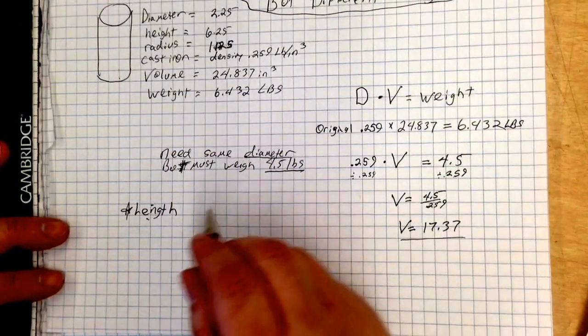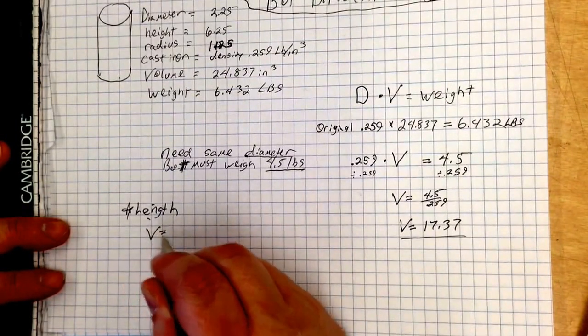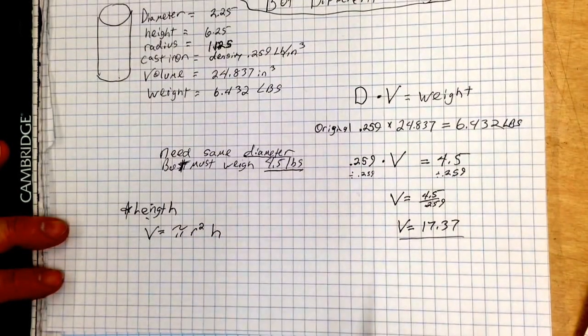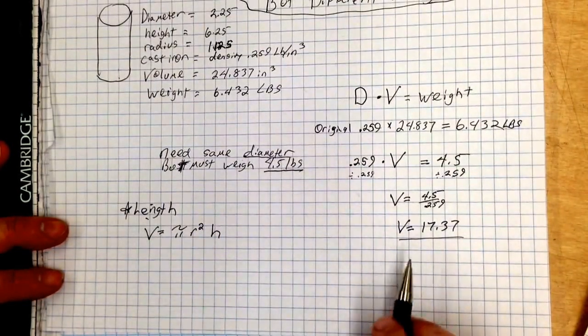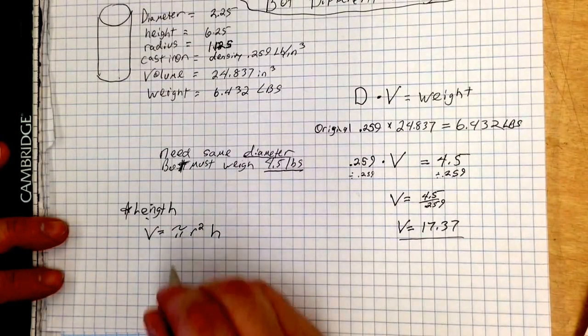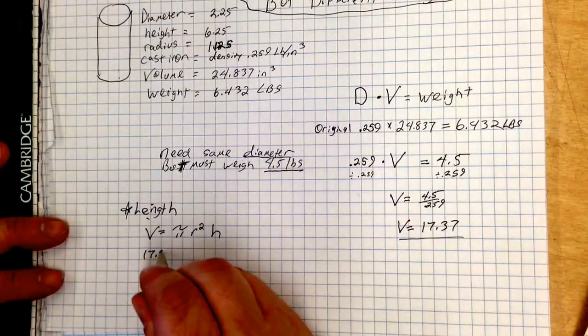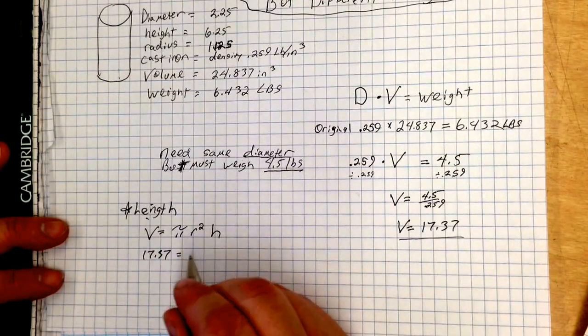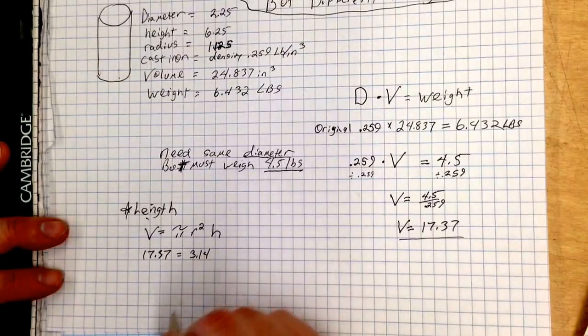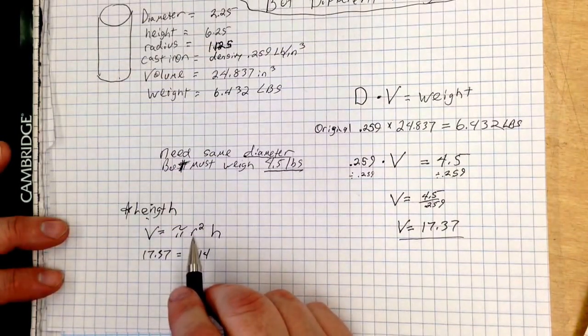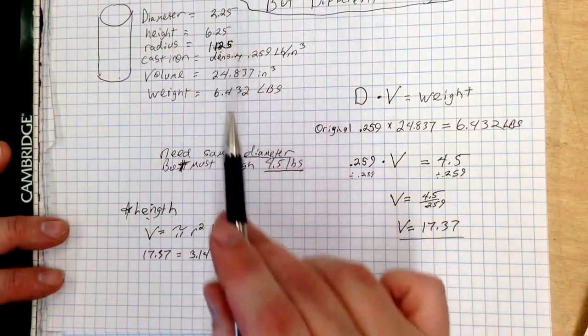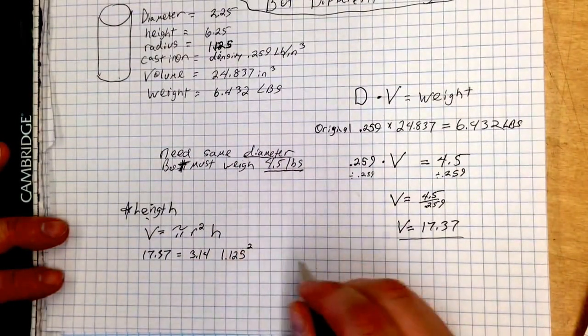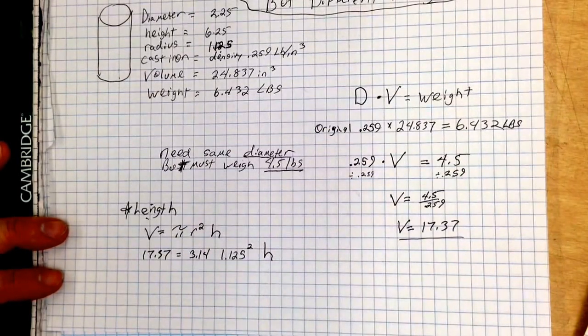Now, we've got our new volume, and we know that volume equals π r squared times the height. So, let's plug in what we know already. We know the volume is 17.37. So we've got the volume already. We know π is 3.14. We know the radius, because we've got that 1.125. We know that we have to square that. Now, we're missing h, the height.